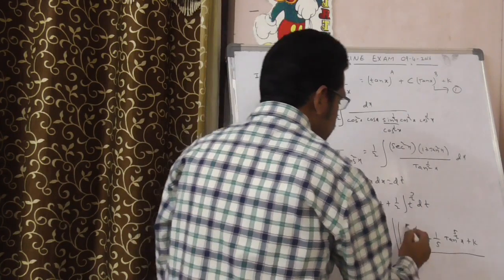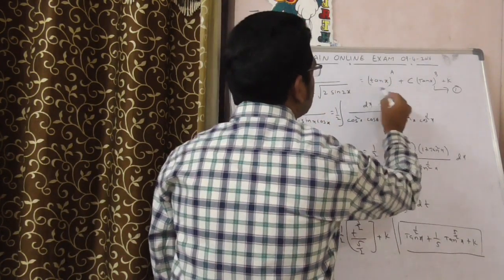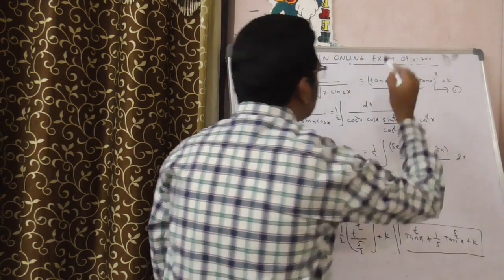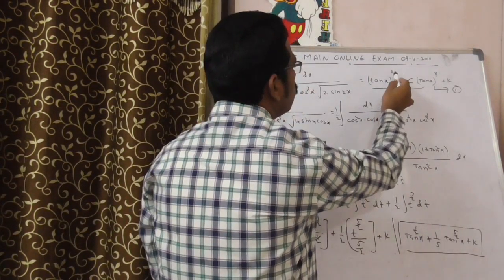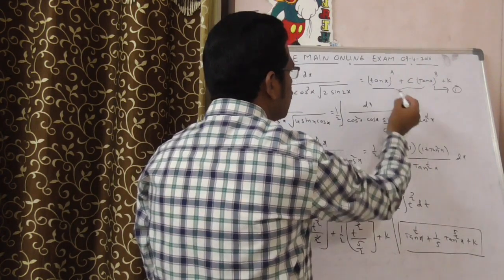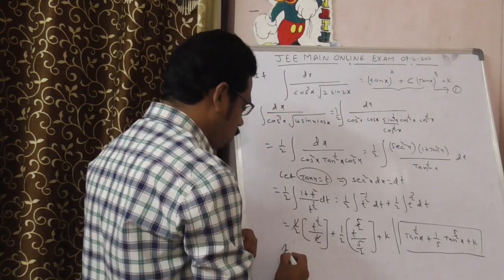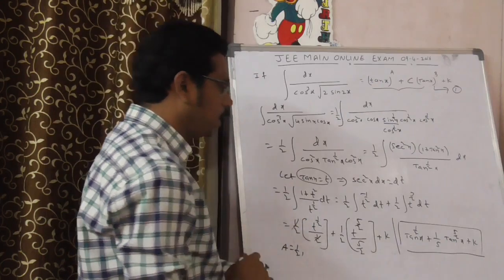Now compare this equation with given choices. Observe clearly. This is tan power 1 by 2, this is tan x whole power A. By observing, what is A here? A is equal to 1 by 2. Finish.